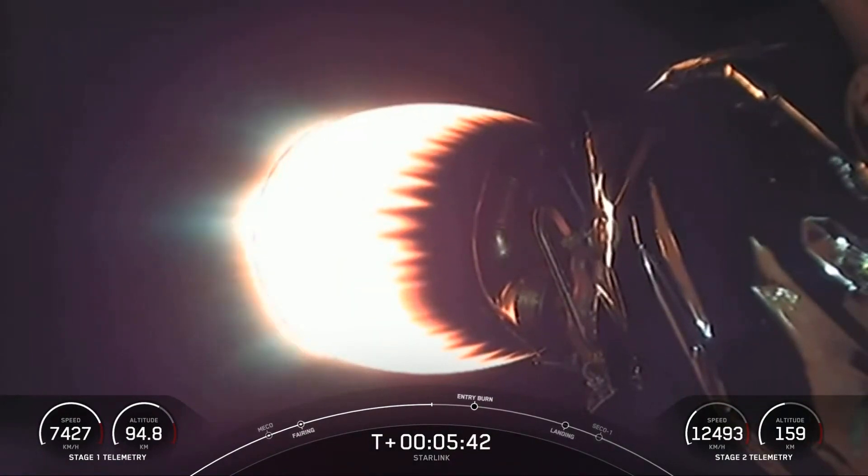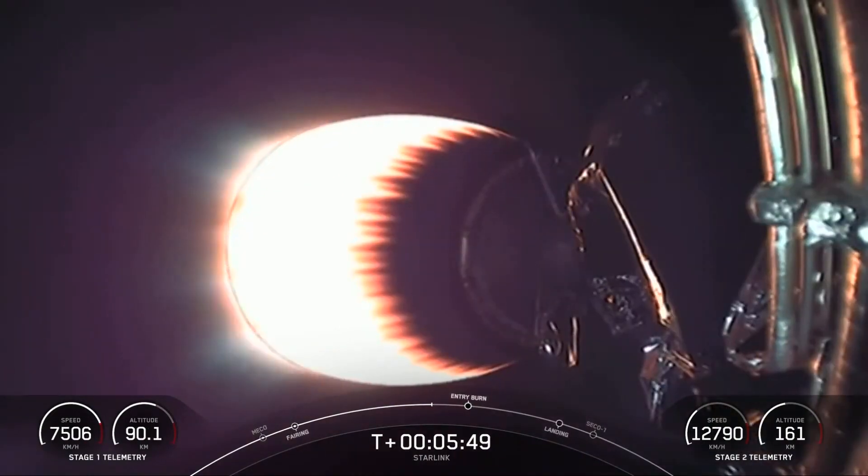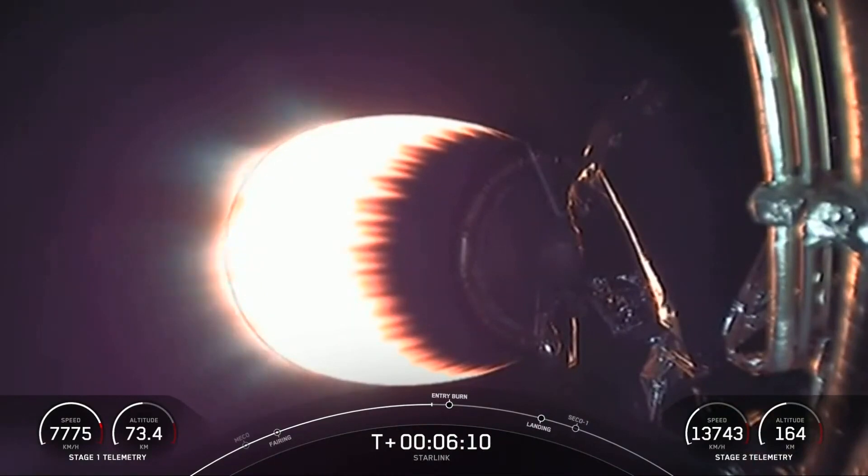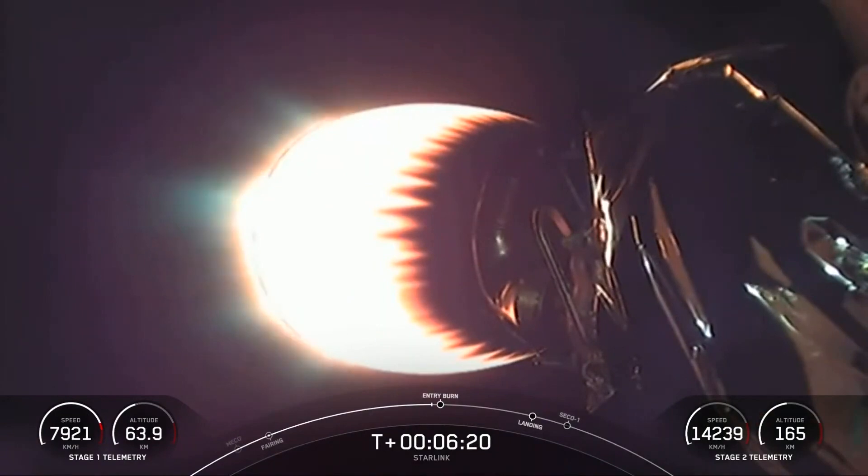You can't quite see the first stage, but it is coasting down, getting ready for the start of entry burn in about 40 seconds here. It is coasting using its four hypersonic grid fins and the occasional burst of nitrogen gas from its attitude control system. If you're just joining us, we had a successful liftoff. Our first stage is returning, getting ready for its entry burn in 10 seconds. And our second stage is looking good with our Starlink satellites.